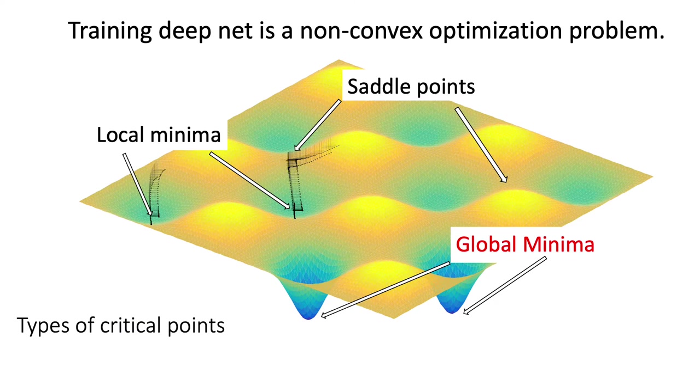Training deep net is a hard problem because it's a non-convex optimization problem as a variable of w. And algorithms like SGD don't provide a global convergence guarantee.